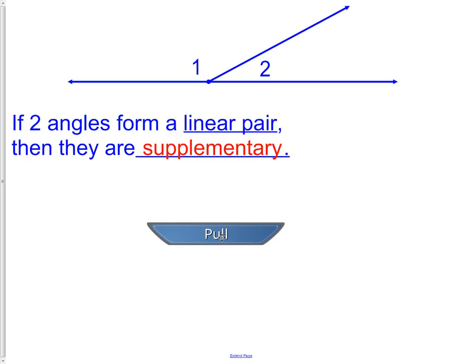Before we've talked about being supplementary and we've talked about linear pairs. So now we just have it written up as a conditional statement. If two angles are a linear pair, then they are supplementary. Two angles adding up to 180 degrees.